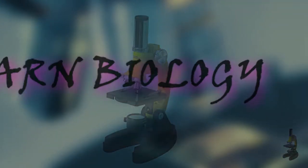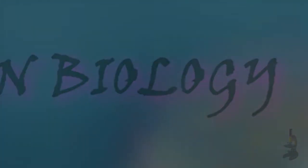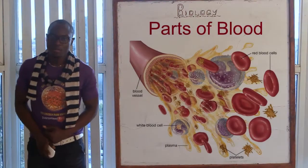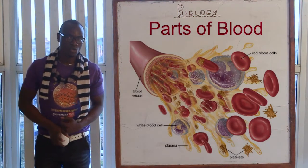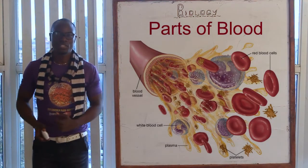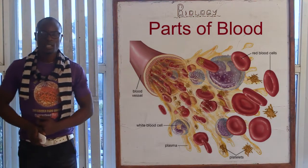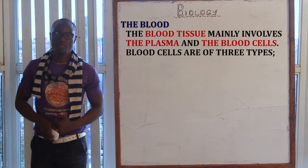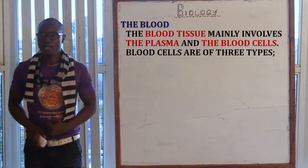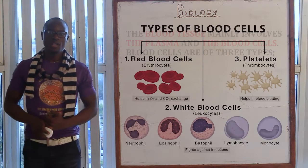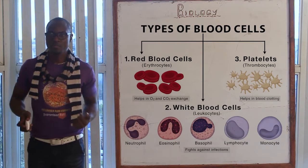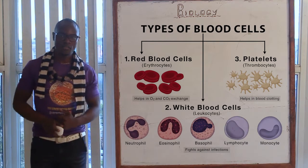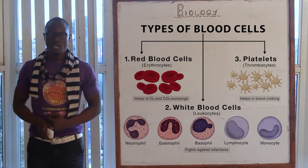Welcome to this biology class, whereby we are going to discuss about the blood. The blood tissue consists of plasma and blood cells. The blood cells we have are the white blood cells, the red blood cells, and finally we have the platelets.